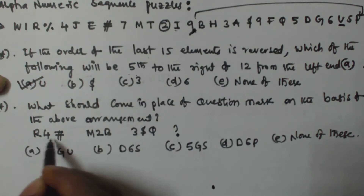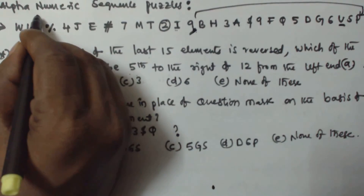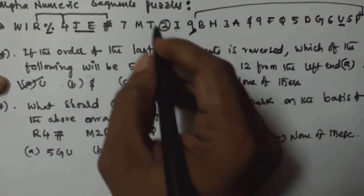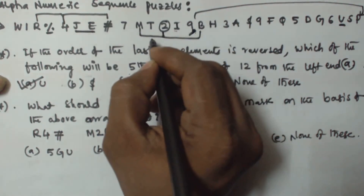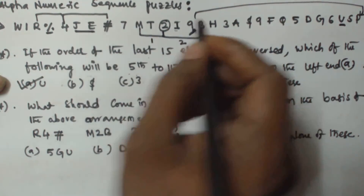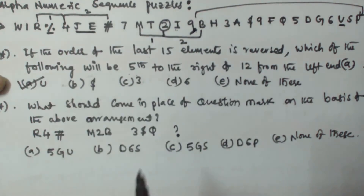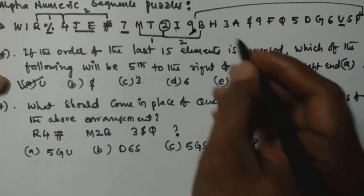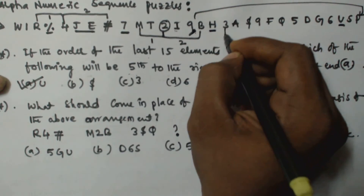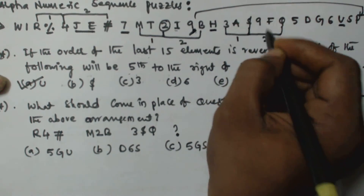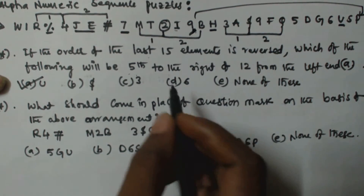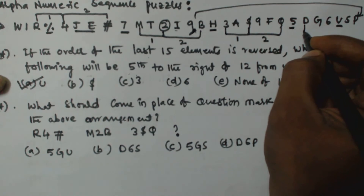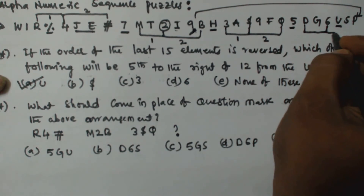For the second question, we look at the pattern. R to 4 has one gap, 4 to @ has two gaps — so one difference and two differences. Then M 2 B: M to 2 has one gap, 2 to B has two gaps — same pattern. Then 3 $ Q: 3 to $ has one gap (H is skipped), $ to Q has two gaps (9 and F skipped). So the pattern skips one element then two elements.